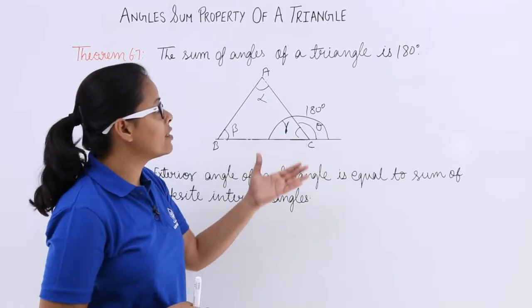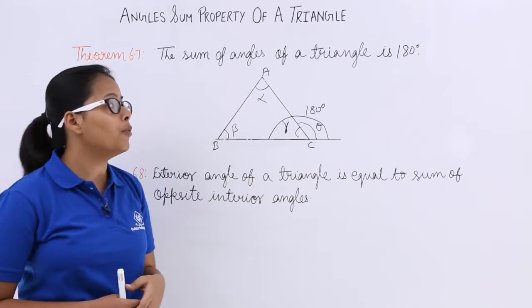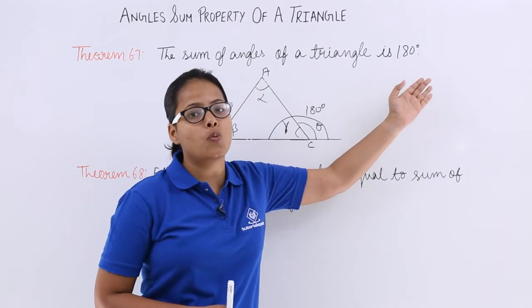Here I will be discussing two theorems based on angle sum property of a triangle. The first theorem says the sum of angles of a triangle is 180 degrees.